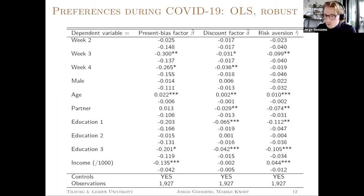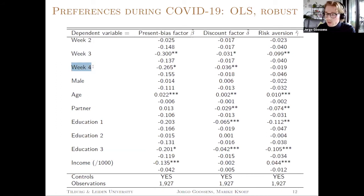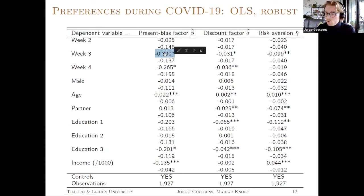Now I look at how preferences evolve throughout the month of March as a result of the COVID-19 crisis. As dependent variables I take the present bias factor, the discount factor, and risk aversion gamma, using simple ordinary least squares estimates. The week dummies indicate the week of March. Towards the end of March — especially week three and four, when there were the abrupt national measures and the intelligent lockdown — participants become more present biased, given by the negative sign. This is not only statistically significant but also economically significant, and they also become more impatient. For risk aversion, we make the same observation: risk aversion decreases.